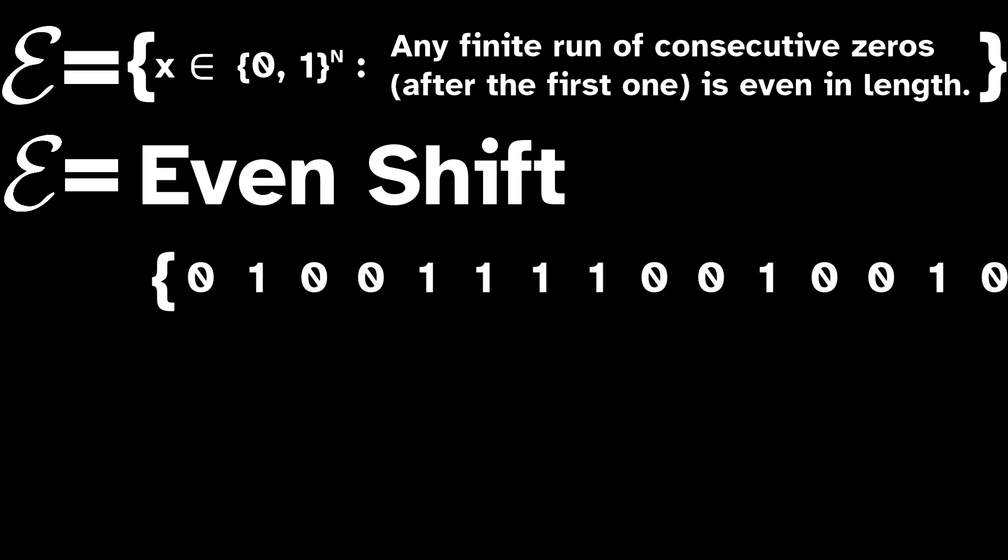It can be tricky to decide whether it is or isn't. On one hand, a run of zeros can be arbitrarily long, but on the other hand, if a run of zeros is finite in length, then surely you only have to check the sub-sequence of that length. In fact, the even shift is not an SFT. To see why, let's talk about imaginary math machines.